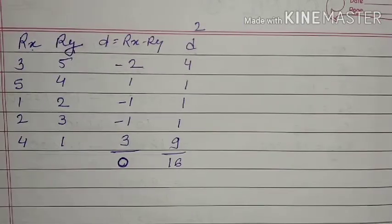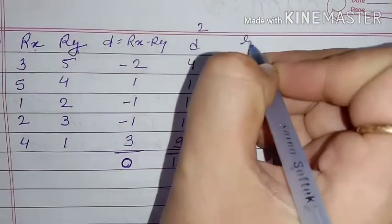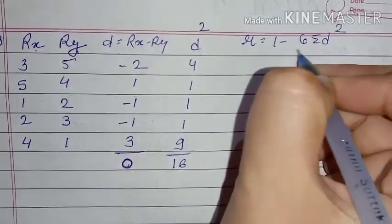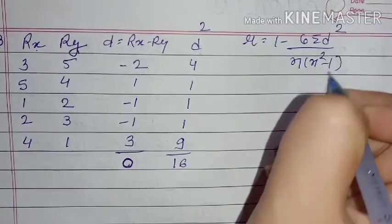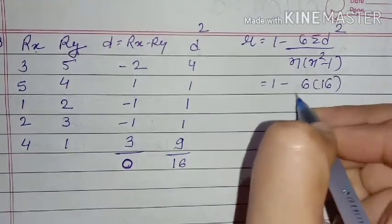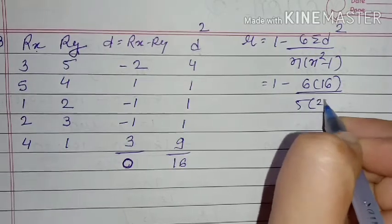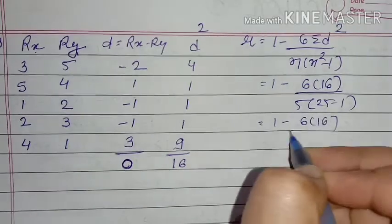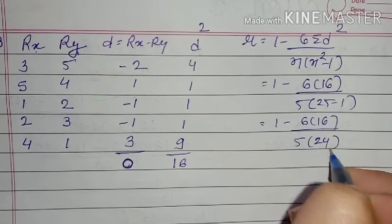Now we have to put all values in the formula. r = 1 - [6 × Σd²] / [n(n² - 1)]. So 1 - [6 × 16] / [5(25 - 1)] = 1 - 96 / (5 × 24) = 1 - 96/120.